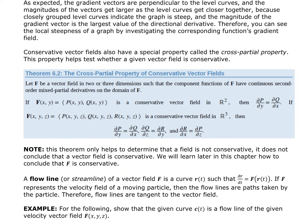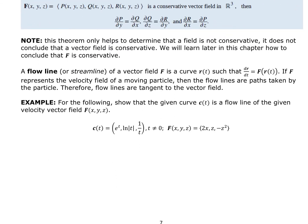A flow line or streamline of a vector field is a curve R(t) such that dR/dt = F(R(t)). If F represents the velocity of a moving particle, then the flow lines are paths taken by the particle. Therefore, flow lines are always tangent to the vector field.